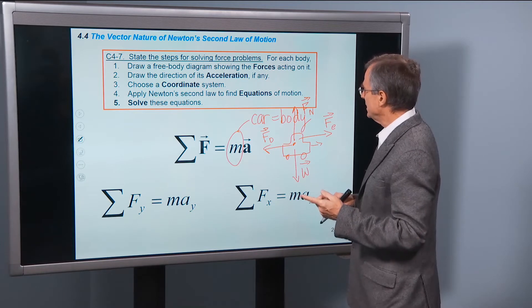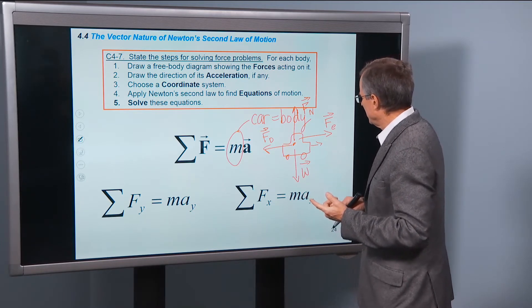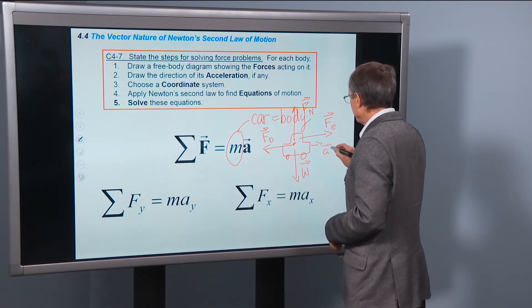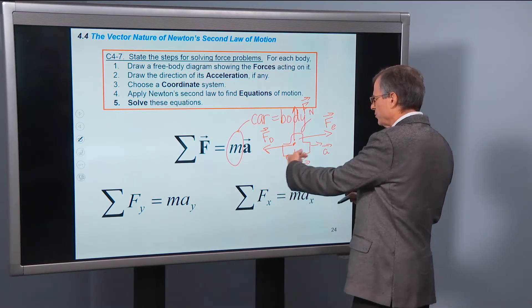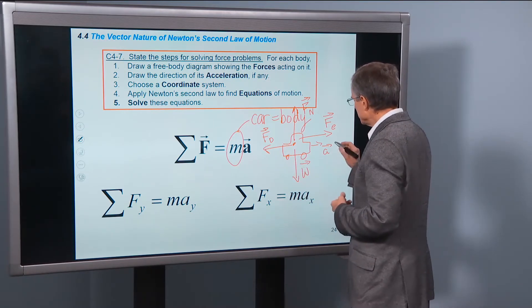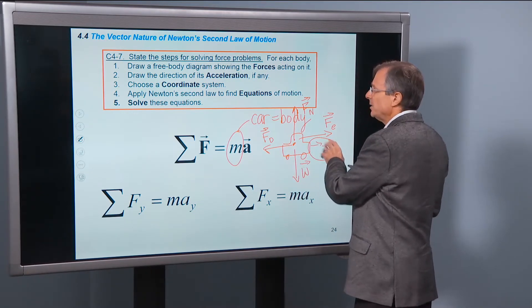Draw the direction of the acceleration, if any. Well, maybe if you're pressing on the gas and accelerating a little bit, then you might be accelerating in the direction of the motion of the car, going faster. So this would be indicating the direction of acceleration.